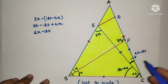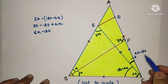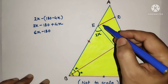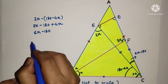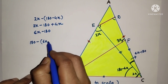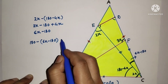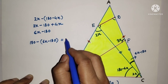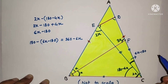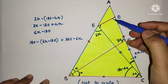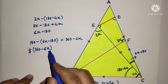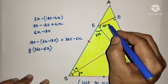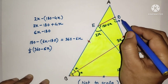This angle DCE is 6x minus 180. Since CE equals CD, triangle CED is also isosceles. Subtracting 6x minus 180 from 180 gives 360 minus 6x for the sum of the two base angles. Dividing by 2, each base angle equals 180 minus 3x. So angle CED and angle CDE are both 180 minus 3x.